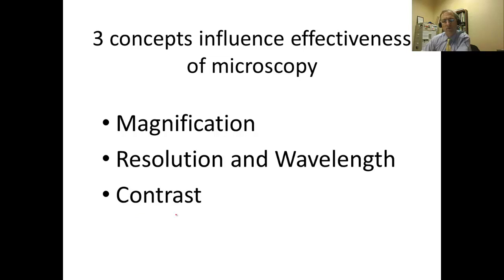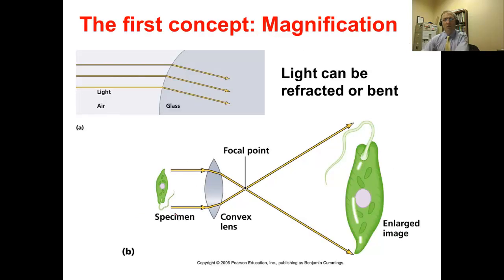Magnification is actually a very simple concept, and I think lots of us have a good understanding of it. Simply put, magnification is the change in the apparent size of an object - things appear bigger than they do normally. Magnification occurs because light can be refracted or bent. We can see this demonstrated in the cartoon in the upper left, where light moves from air into glass.